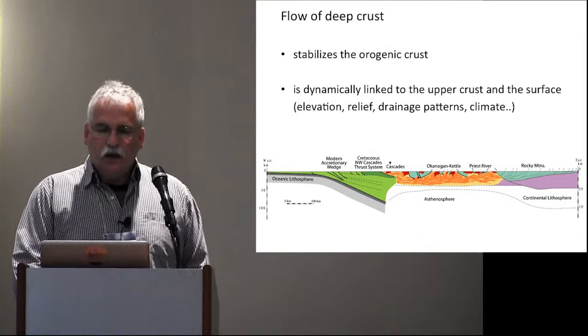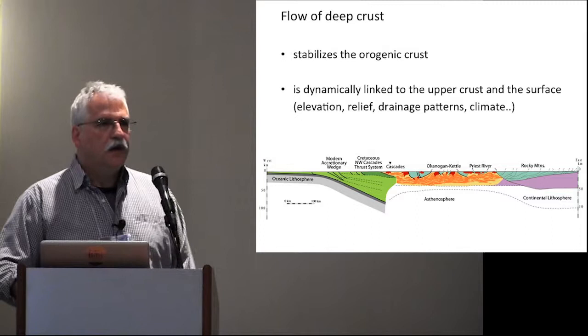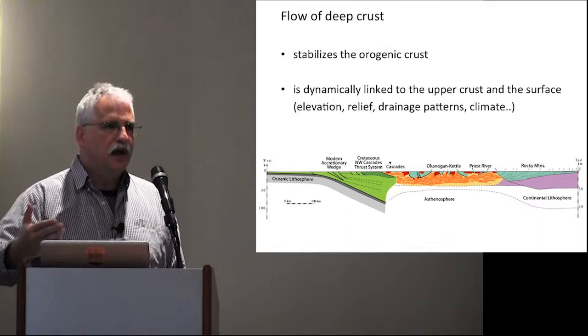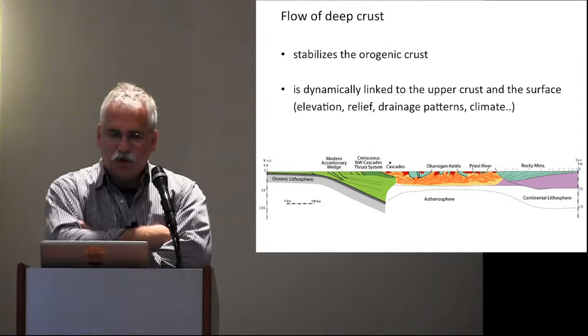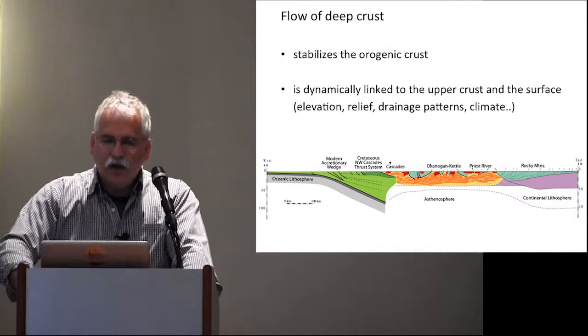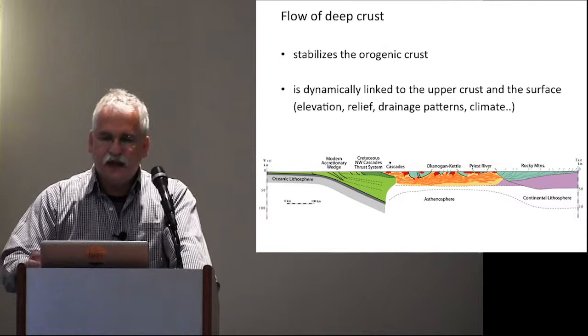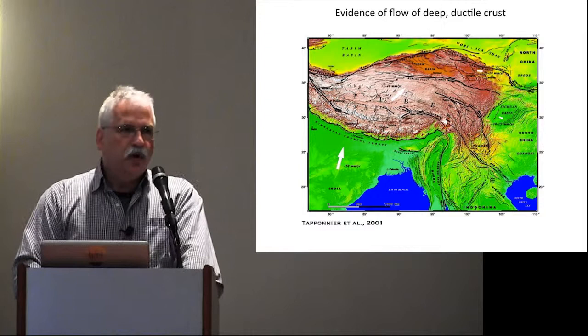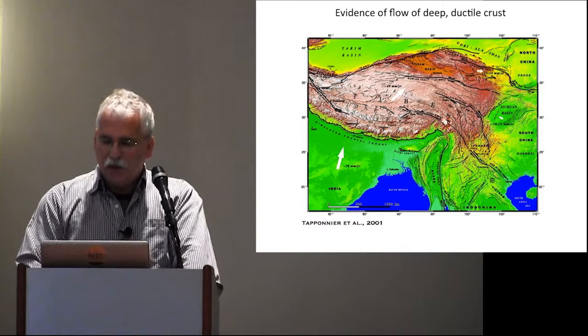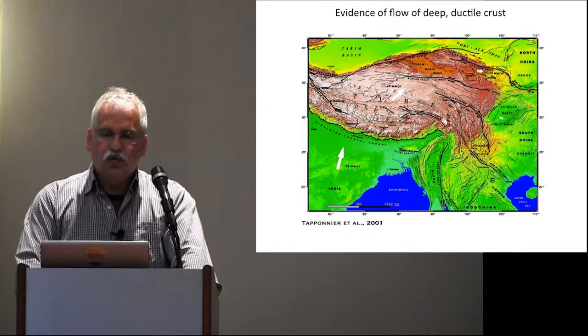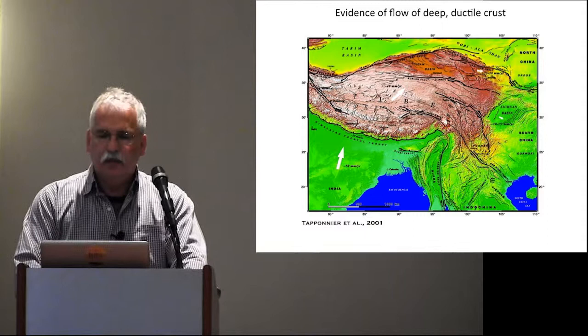Two points I'll try to illustrate. One is that the flow of the deep crust really stabilizes orogenic crust. We know that because if we look at the North American continent and the deep levels of lithologies, we find that a lot of these deep levels are made of migmatites — rocks that were partially molten and have crystallized at those depths. The second point is that the flow of the deep crust is dynamically linked to the upper crust and the surface, which is important for understanding large-scale geodynamics of orogens.